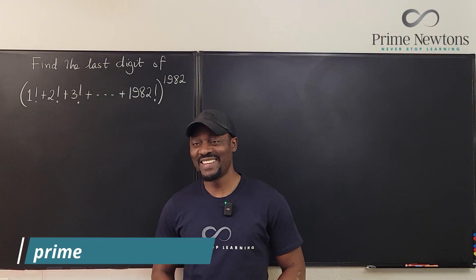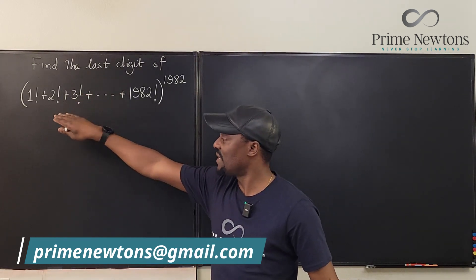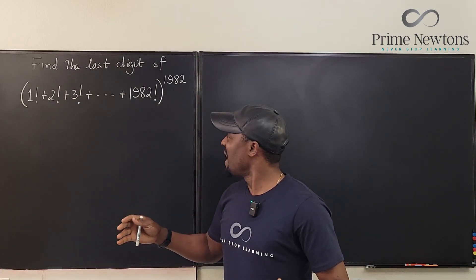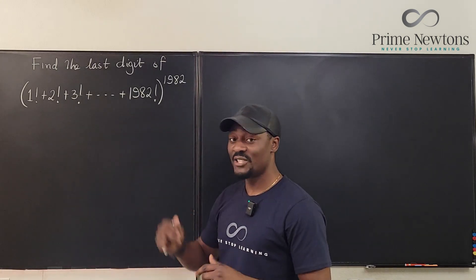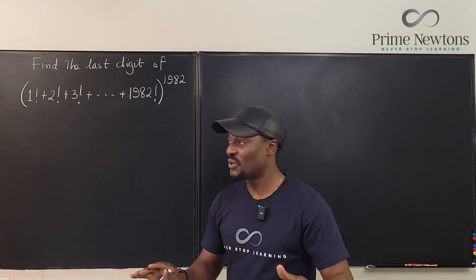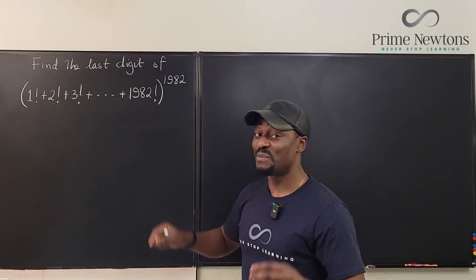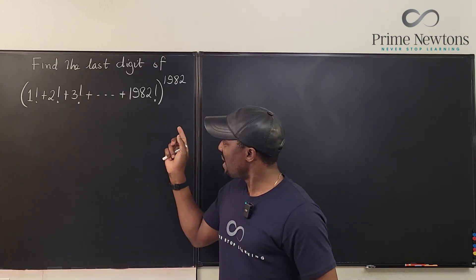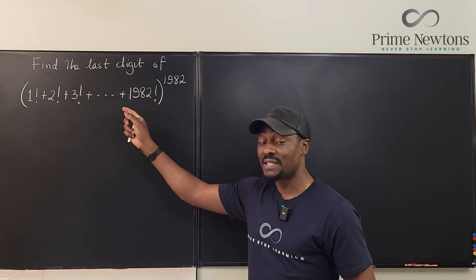Welcome to another video. This mission is finding the last digit of this expression — the sum of 1982 factorials, starting from 1 factorial all the way to 1982 raised to power 1982. Nobody expects you to compute all the factorials or even raise it to power 1982. What we're expected to do is find the basic principle that governs factorials and that also governs last digits.